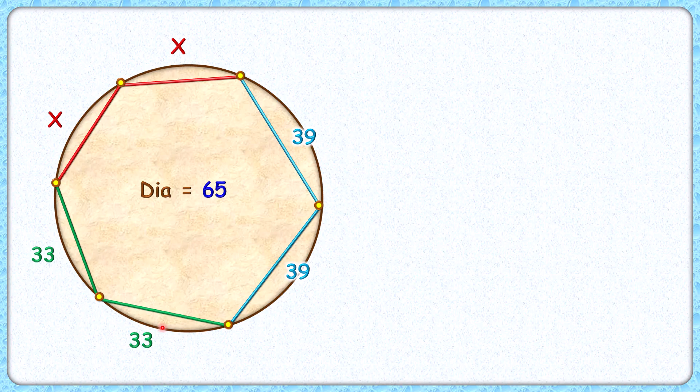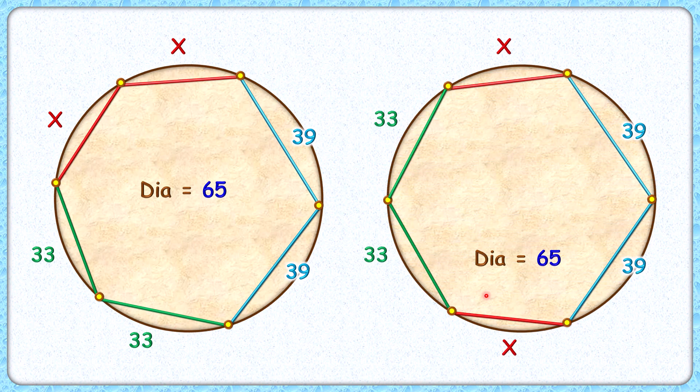They will just get fitted inside the circle so it will still remain a cyclic hexagon. Only thing is the angles will change slightly, but our answer related to the value of x will not change.